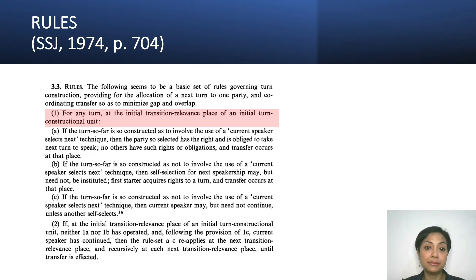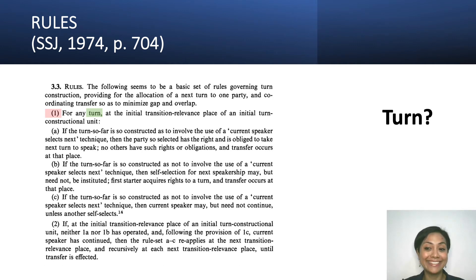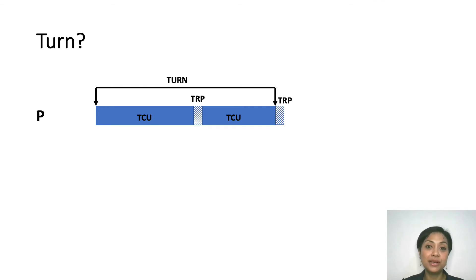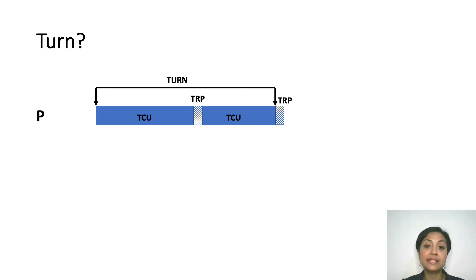Hopefully by now we have a good understanding of what TRP and TCU are and the concept behind them — which is that there is a space or place or time in a conversation where a turn may end. Now let's get back to Rule 1. Besides TRP and TCU, Rule 1 also mentions the word 'turn.' What is a turn? With regards to TRP and TCU, a turn is a bunch of TCUs where at the end of it the current speaker actually stops talking and speaker change occurs.